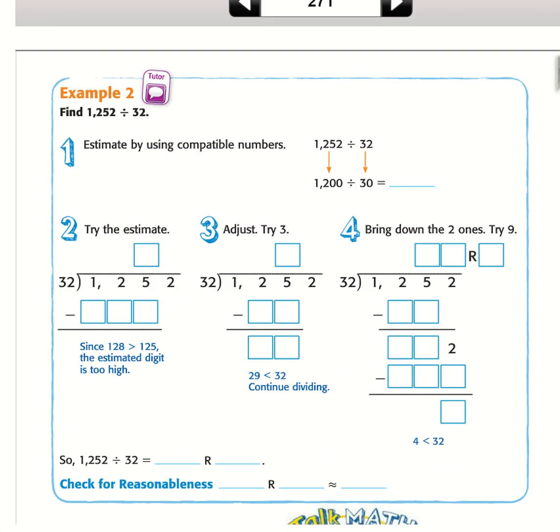We're going to move on to example 2. 1,252 divided by 32. Estimate by using compatible numbers. We used 1,200 divided by 30. If I use the shortcuts, 120 divided by 3 is going to be 40.